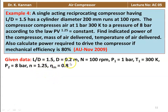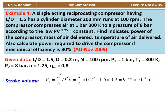Given: L/D = 1.5, diameter = 0.2 m, speed = 100 RPM, P1 = 1 bar, T1 = 300 K, P2 = 8 bar, n = 1.25, mechanical efficiency = 80%. Stroke volume: Vs = (π/4) × D² × L = (π/4) × 0.2² × (1.5 × 0.2) = 9.42 × 10⁻³ m³.